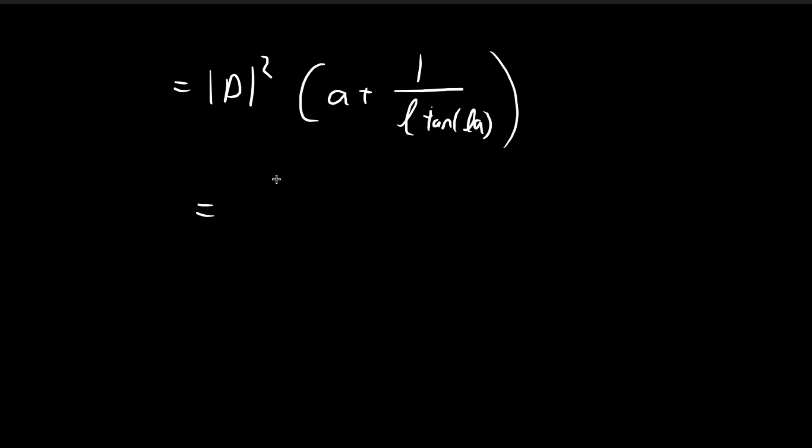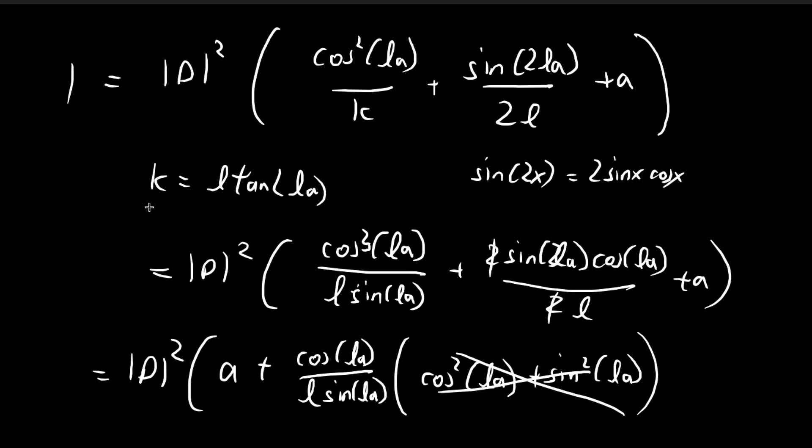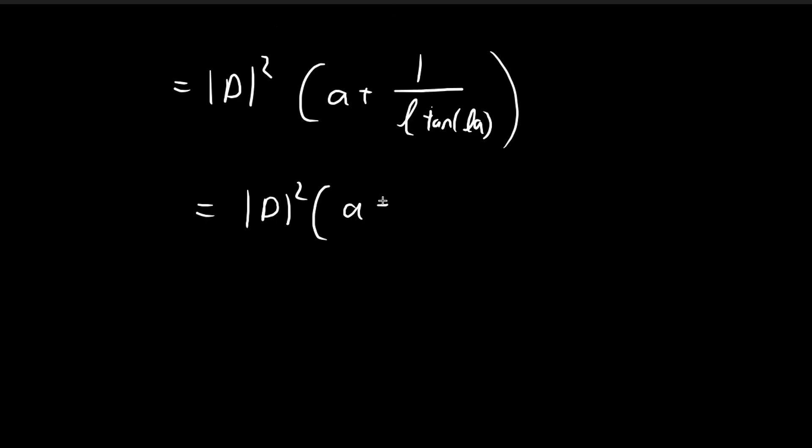So remember, sine divided by cosine is equal to tangent. And then l tangent l a, that's just equal to k. And you can see that I can express everything in a much cleaner expression.